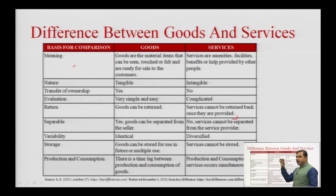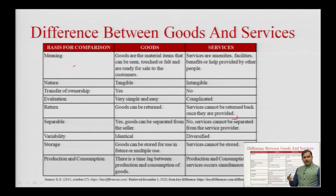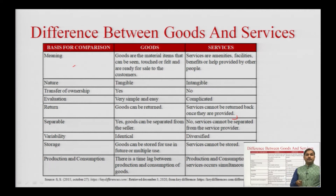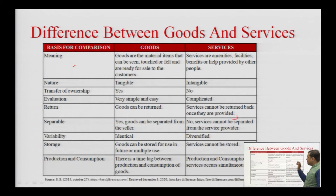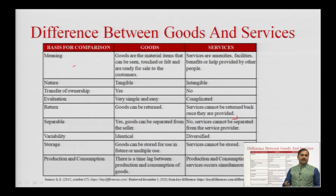In terms of nature, a product is tangible — we can touch and feel it — while a service is intangible. Regarding transfer of ownership, for goods I pay money and it becomes mine, but for services we pay for what we enjoy without owning it. Evaluation is simpler for products since we can touch, feel, and experience them — for example, trying a pen at a stationary shop — whereas for services like a haircut, we cannot try before committing.